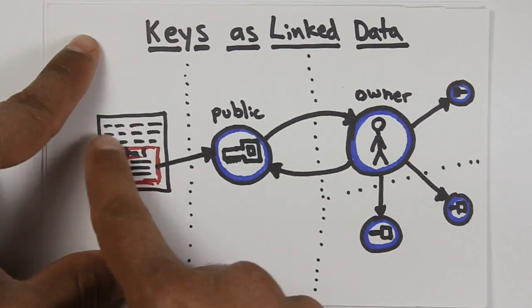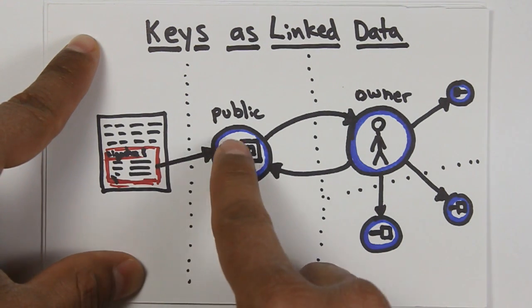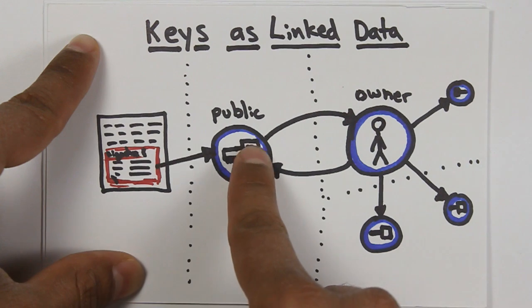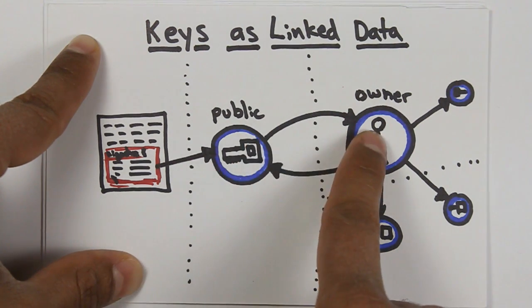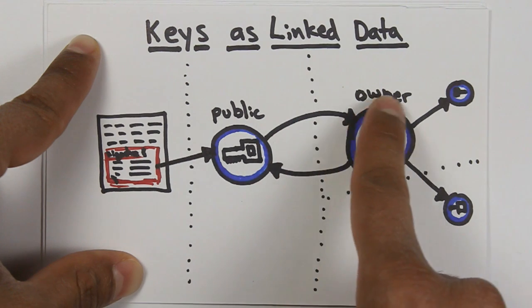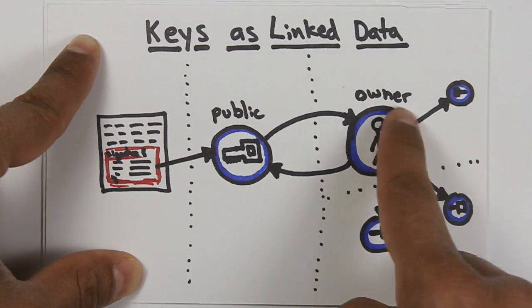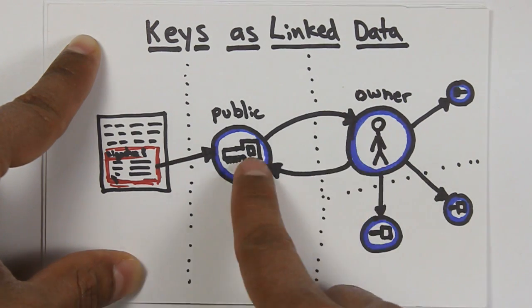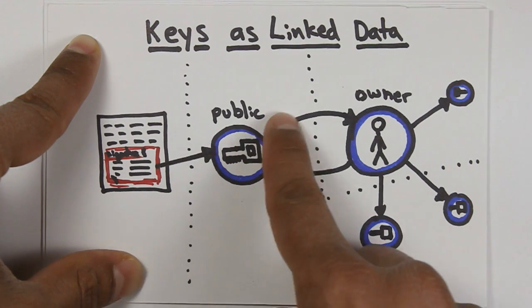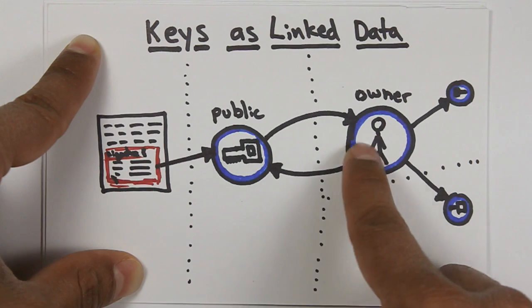The machine starts at the digital signature, follows the link out to the public key. The public key is marked up in linked data. The public key specifies who its owner is. You can follow that link to see who the owner is and get more linked data on the owner. And then the owner can have another relationship back to the key, saying that they own the key. This bidirectional relationship is very important. It allows us to ensure that the ecosystem is secure.